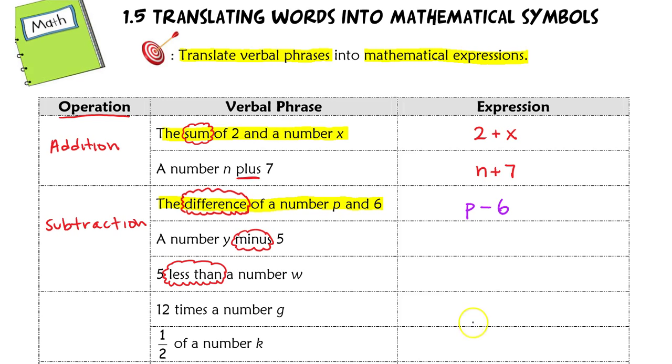Next example, a number y minus 5. So this one's pretty straightforward. We're going to take y and we're going to subtract 5. So that's y minus 5.